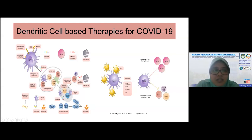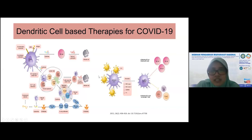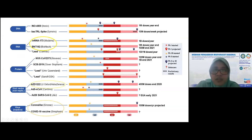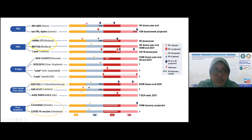Ini juga dari sel dendritik. Base dari vaksin dari sel dendritik, intinya sama, hanya perbedaannya di maturasi dari sel dendritik. Lalu ini yang berada saat ini, yang dilingkari adalah yang masuk ke Indonesia. Ada satu lagi Novavax yang juga masuk ke Indonesia. Yang paling baru adalah Pfizer, dan ada juga Anhui dan JNJ atau Johnson & Johnson.